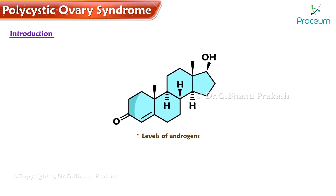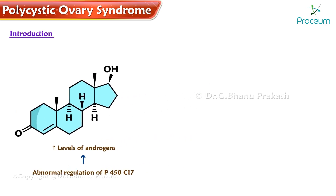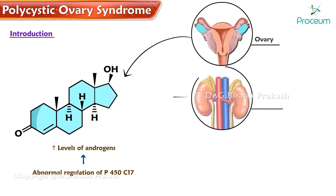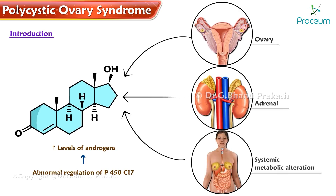The main reason for an increase in androgens is the abnormal regulation of P450C17. The sources of these hormones are mainly the ovary, adrenal, and systemic metabolic alteration.